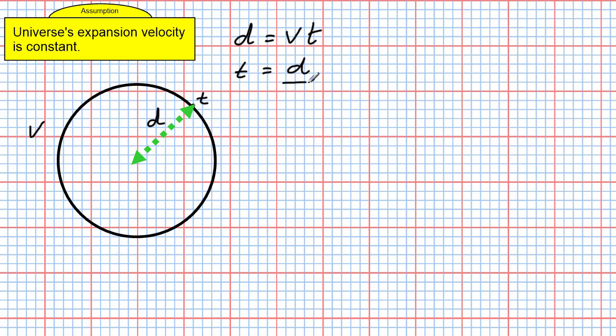Now I want to have an expression for time, so therefore time, if I rearrange, is equal to distance d divided by v. But also know that the Hubble law states that the velocity out here, velocity v, is equal to H₀d.